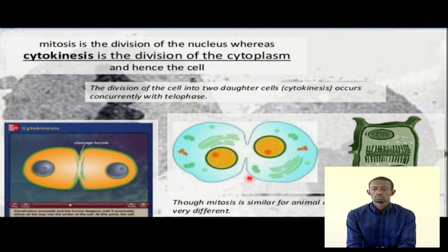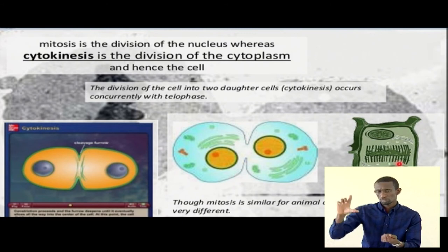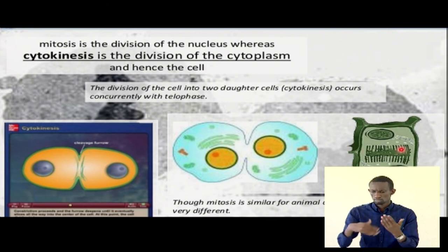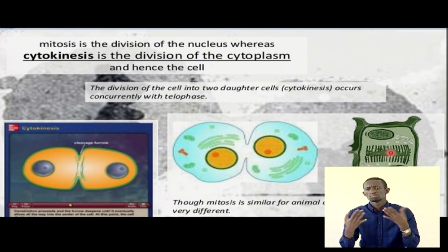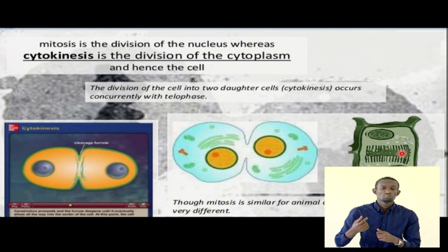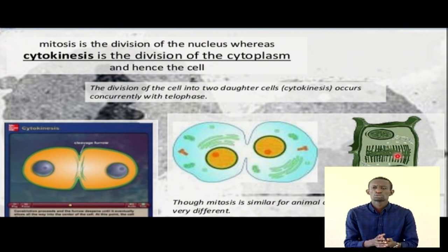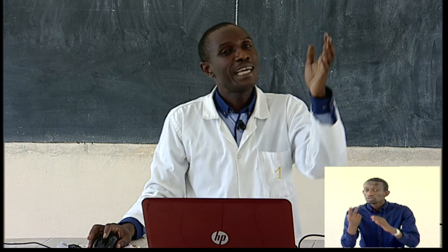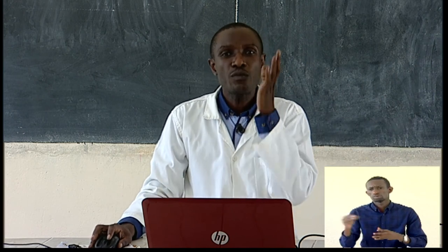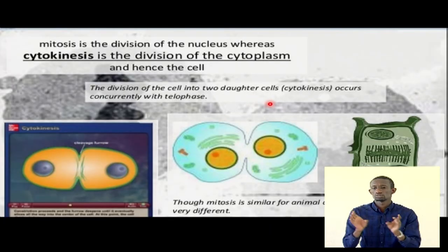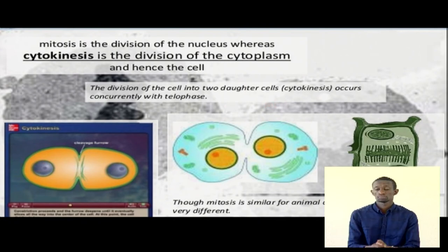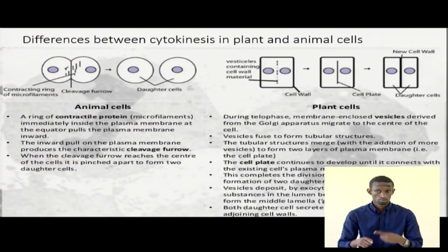We now have animal cell, plant cell. A wall we'll have to create in the middle. The rest of the structures that have actually not been used and are not needed, like the fibers, will be used to build up a barrier. Division of the cell into two daughter cells as cytokinesis will occur around the same time when telophase is taking place. And here we go to put it all together as a summary.